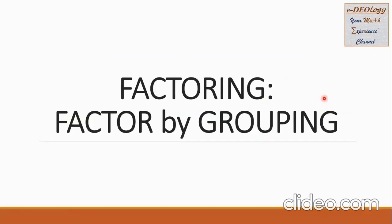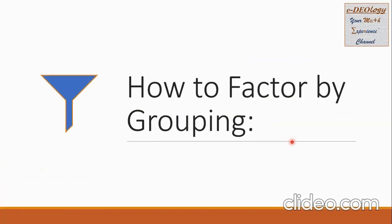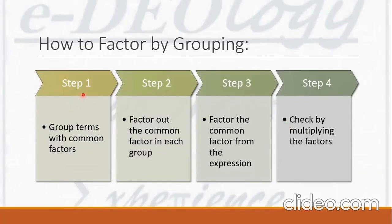Today we're going to study factoring — this time, factoring by grouping. How to factor by grouping: we're going to follow four general steps. Step 1: group terms with common factors. Step 2: factor out the common factor in each group. Step 3: factor the common factor from the expression. Step 4: check by multiplying the factors.